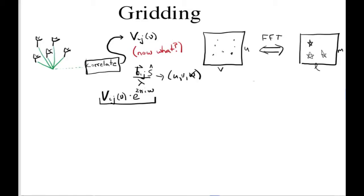So in principle, I know my U and V coordinates, so I should be able to just stick my measurement at the appropriate U and V coordinates. However, it's not quite that simple, and that's where gridding comes in.